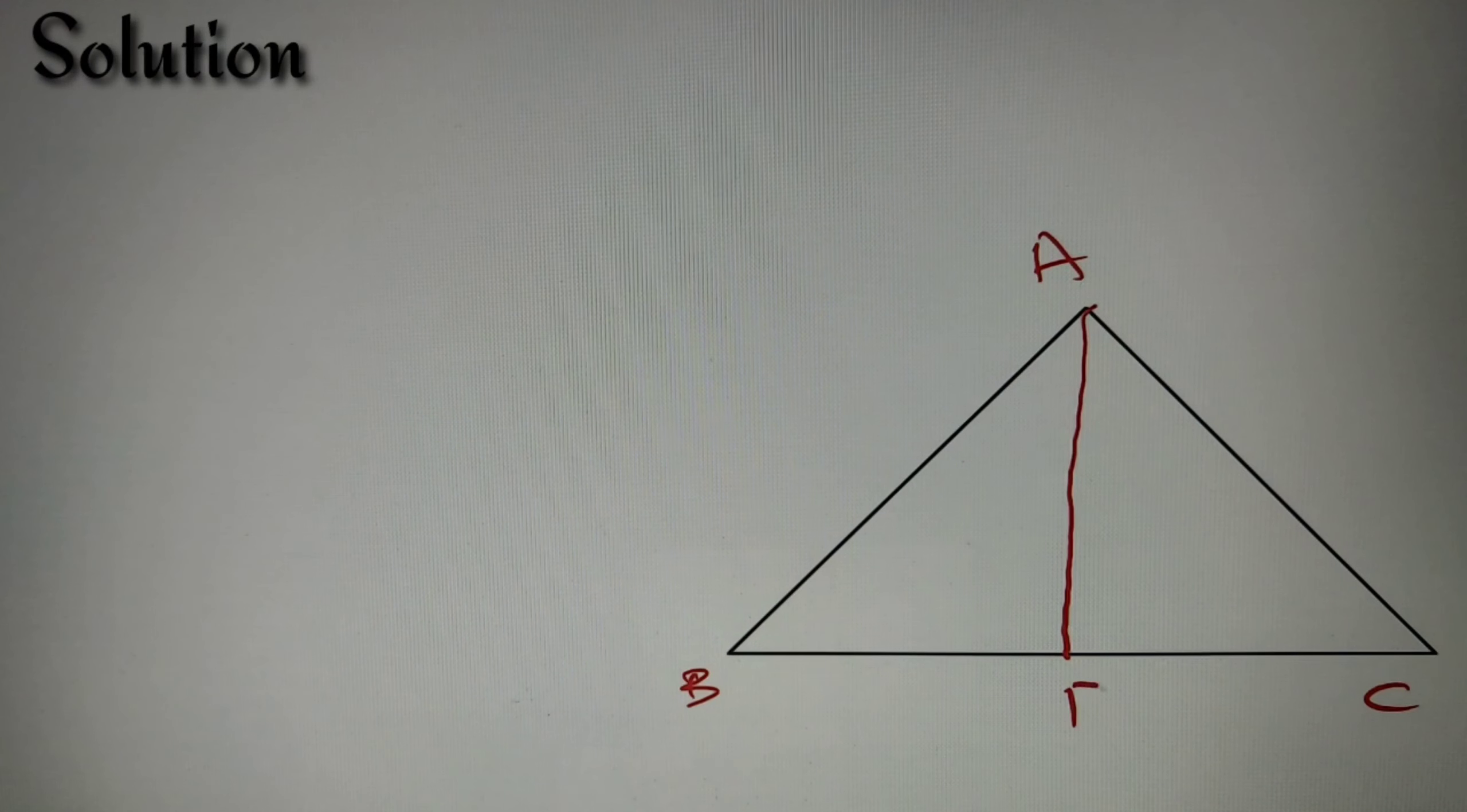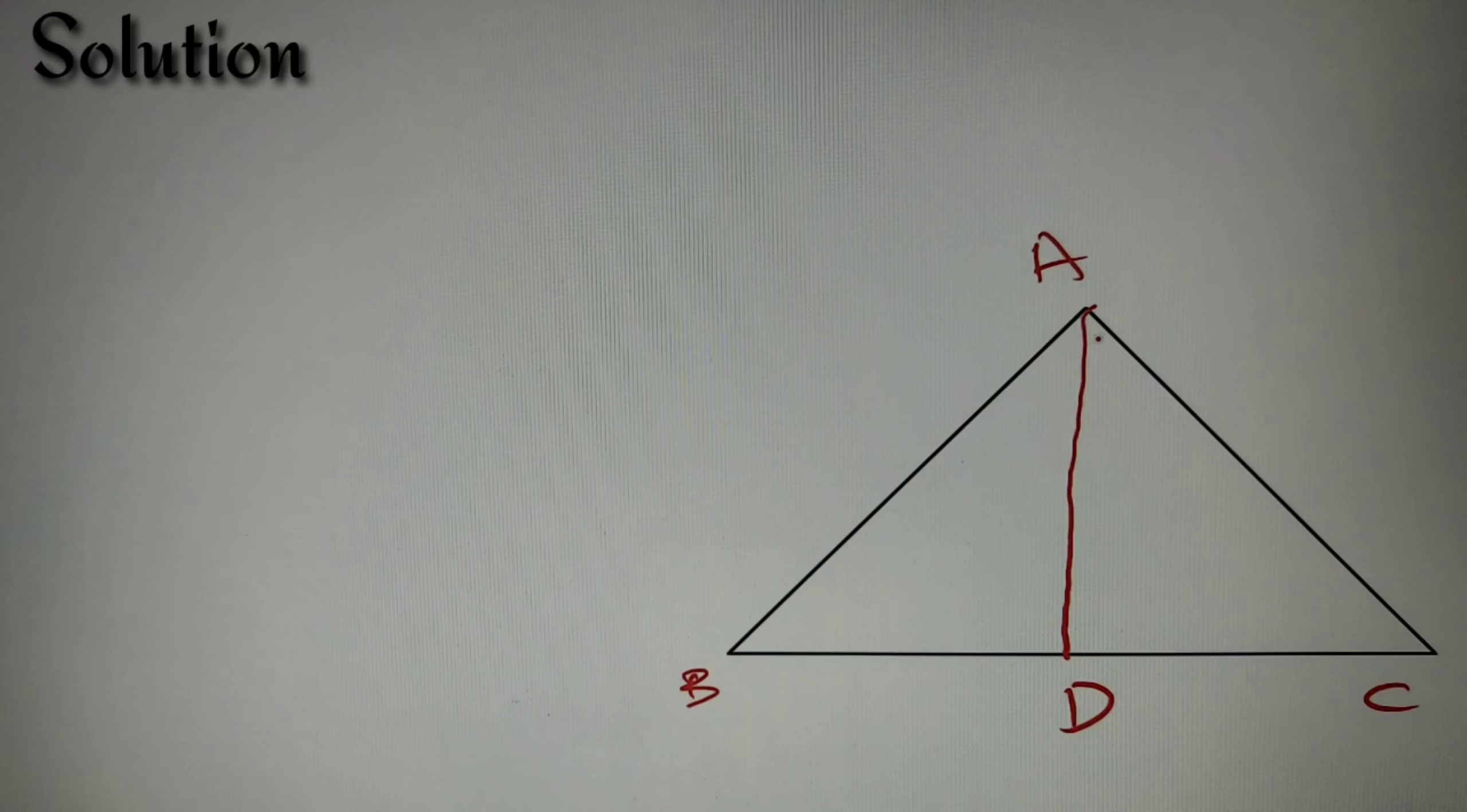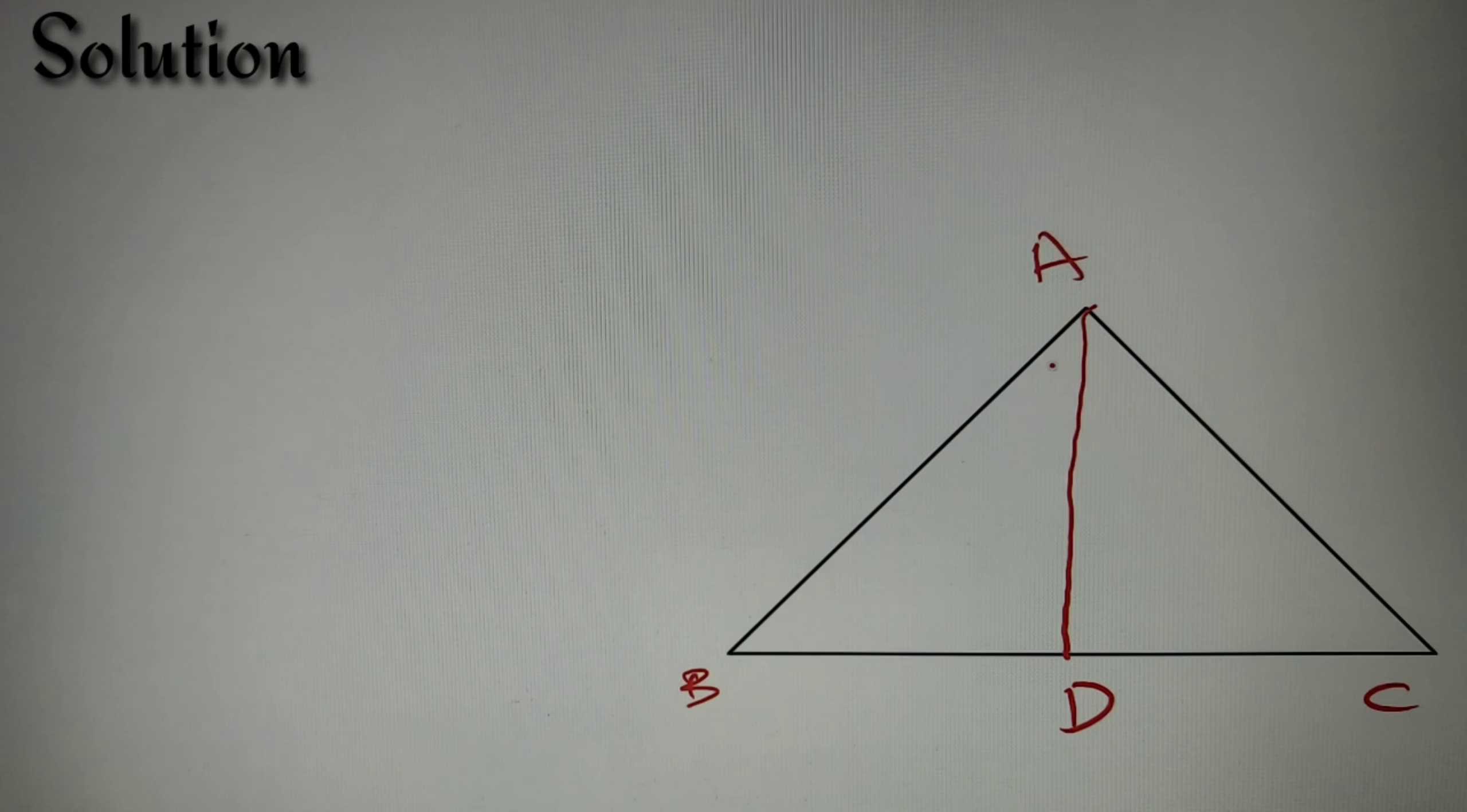Now we are also given that the value of angle BAC is equal to 120 degrees. Now since this is the internal angle bisector, this angle is equal to 120 by 2, that is equal to 60, and so this is equal to 60 and 60.